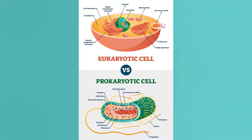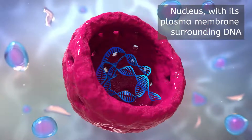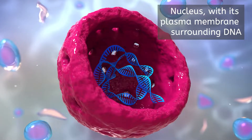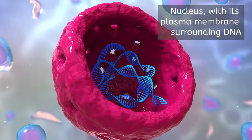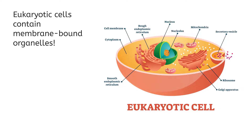We know that all cells contain DNA. But a eukaryotic cell neatly stores its DNA linearly in a nucleus, dyed dark pink in this under-the-microscope image. The nucleus has a protective plasma membrane, just like the plasma membrane around the entire cell, to keep the DNA safe. Another key feature of eukaryotic cells is that they contain several other different membrane-bound organelles, like the nucleus.